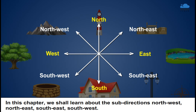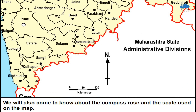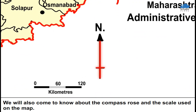we shall learn about the sub-directions: North-West, North-East, South-East, and South-West. We will also come to know about the compass rose and the scale used on the map.